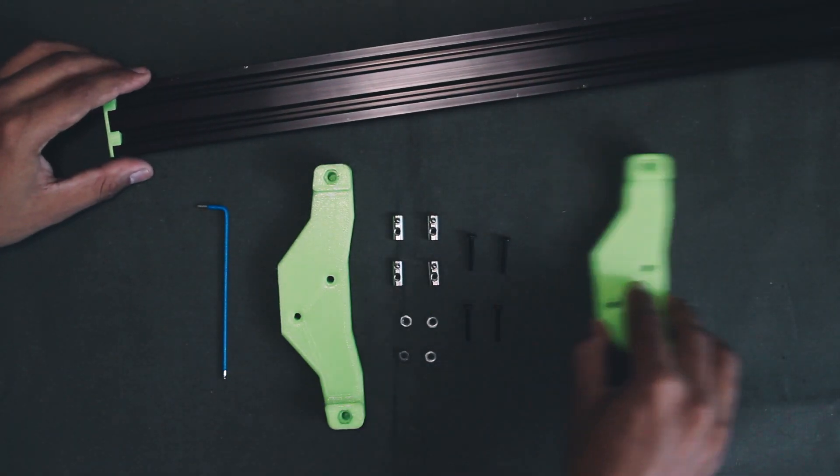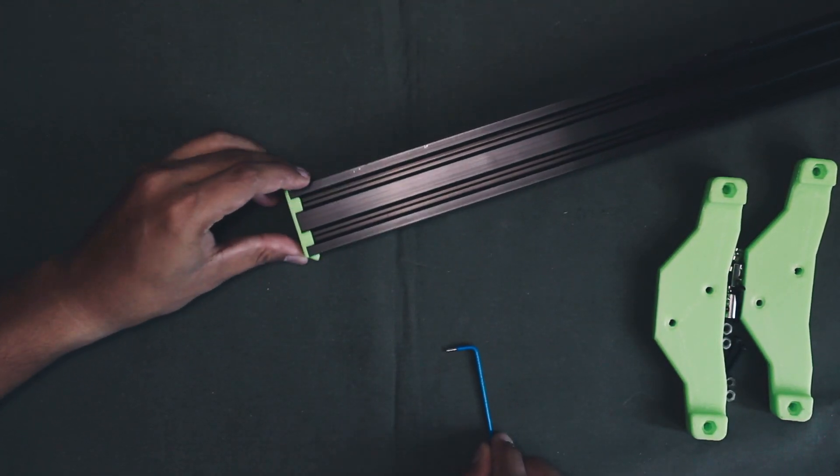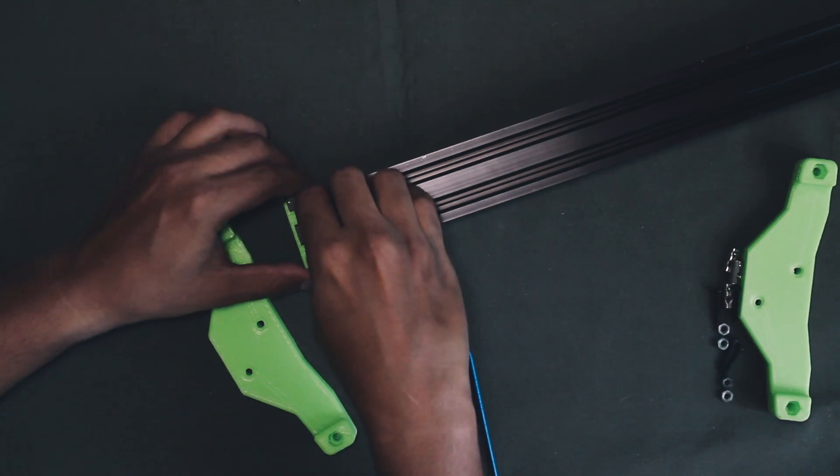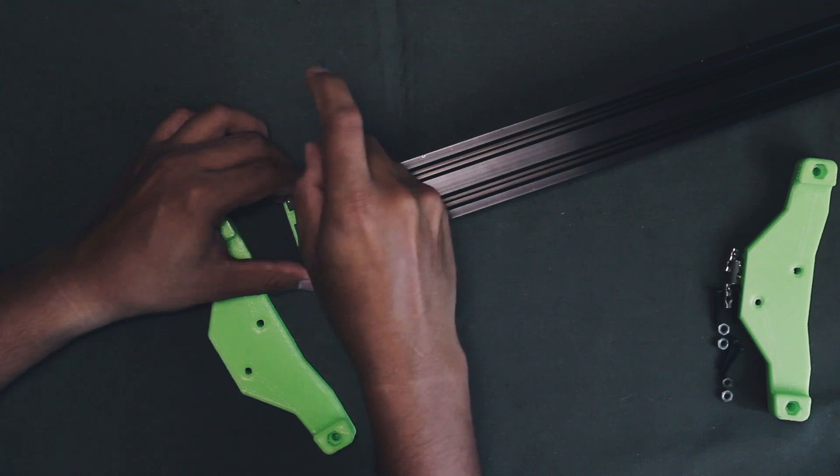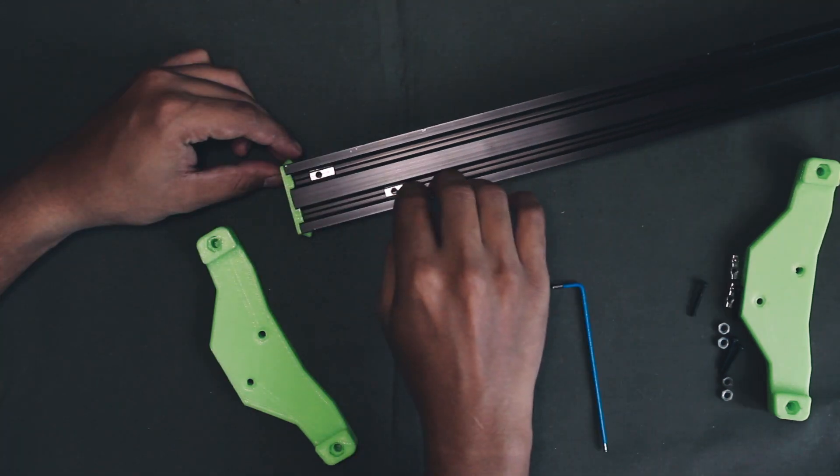Now we're gonna attach the feet to the camera slider. First start with the roll-in T-slot nuts and add them to the grooves inside the aluminum rail. Following this, secure the feet to the aluminum rail using the M3 screws.